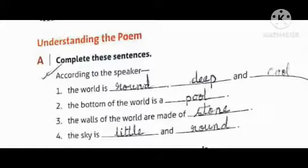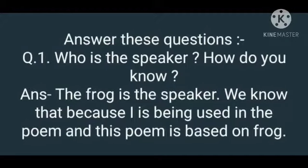And the last one is: the sky is dash and dash. And the answer is: the sky is little and round.